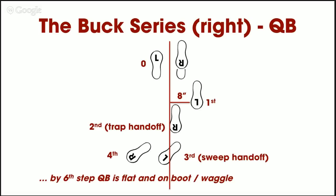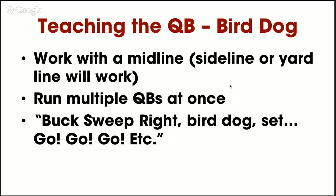The key takeaways: the quarterback is reverse pivoting, coming across the midline, giving up that midline just barely to the fullback, and making the sweep handoff on that third step. Work with the midline like a sideline or yard line — you need something for that quarterback to step over. Be creative. When teaching quarterback steps, you can put multiple quarterbacks on the midline and have them all work simultaneously in bird dog, which helps build consistency.